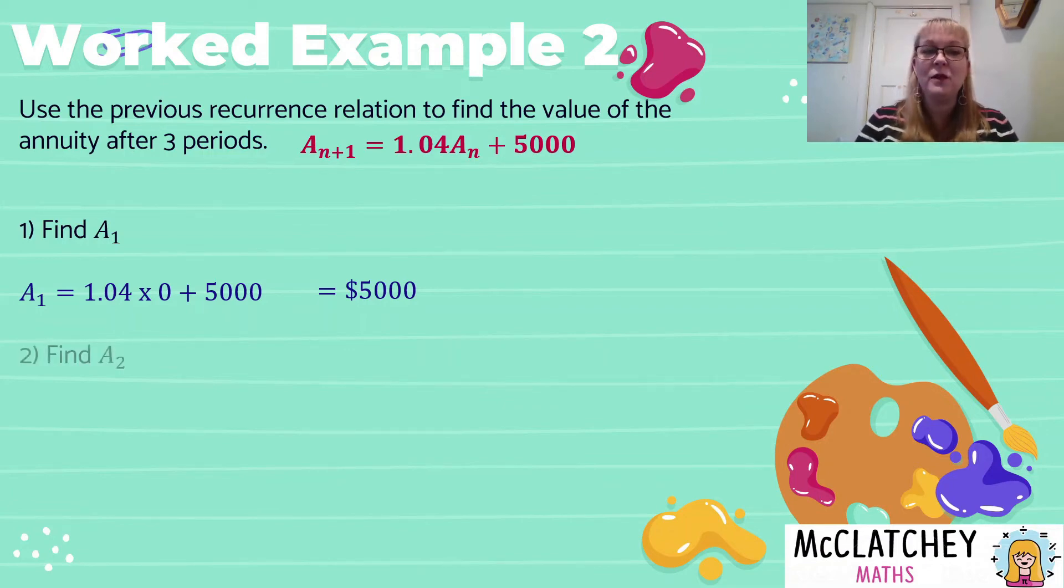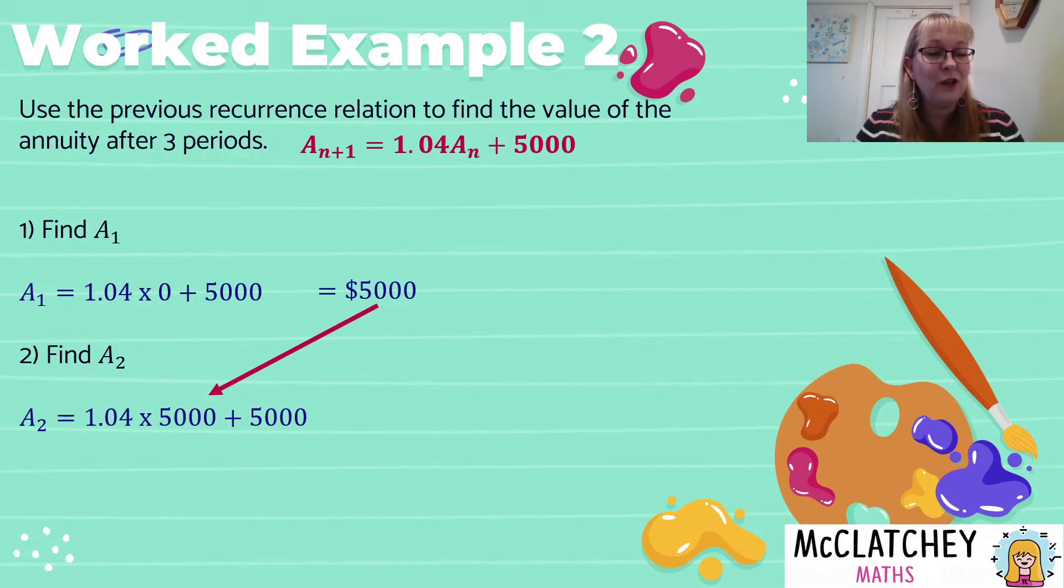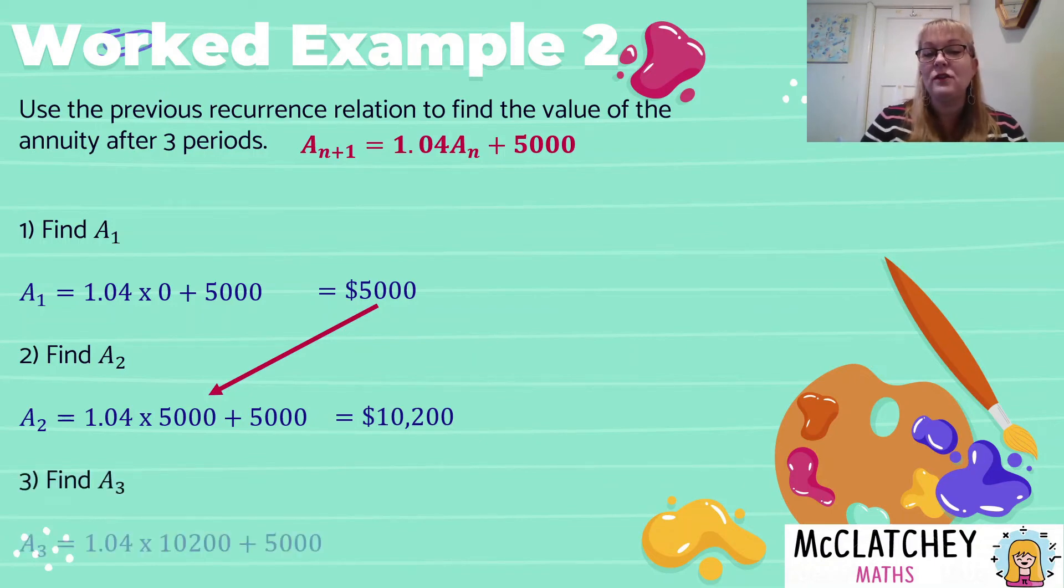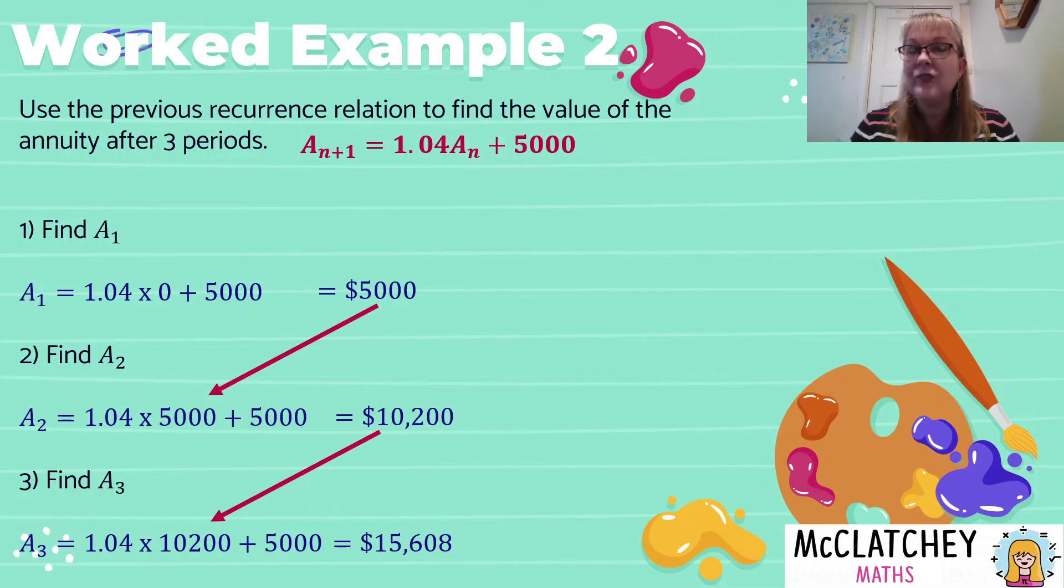Well, at time zero, we don't have any money in the bank at all. So we've got a zero value for A zero. Now you might be wondering, why do I even need to write that? Well, that's very important. You could make the mistake of thinking the value of the annuity at time zero is $5,000. And I actually made that mistake myself when I started putting this PowerPoint together. It was a natural thought to think that you've already got 5,000 in the bank. But no, when the annuity starts, you have nothing in the bank. And then you put the 5,000 in.